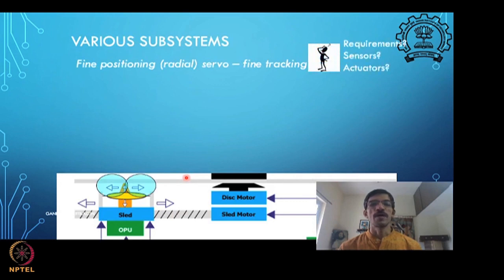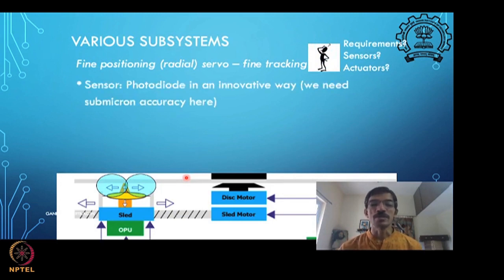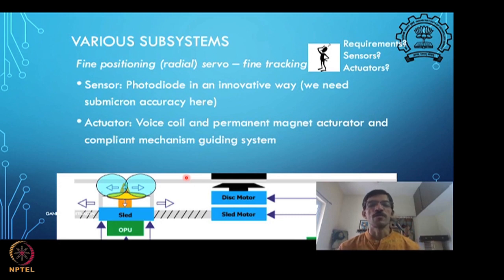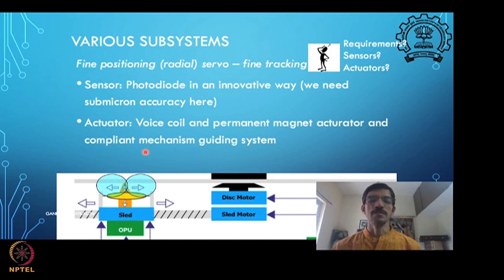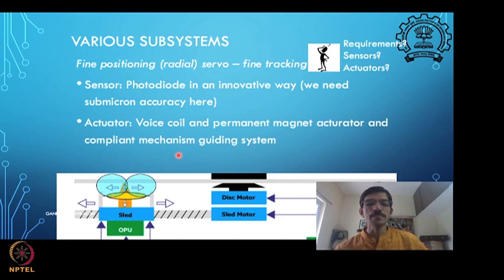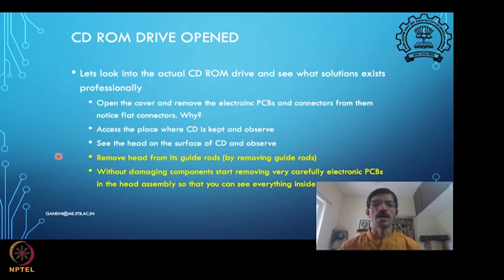Now let's think about fine tracking: what are the requirements, what sensors and actuators are needed? The sensor used here is some kind of photo detector, and the actuator is a small voice coil actuator. We need to think about how to create a closed-loop system for fine tracking and fine focusing — what sensors and actuators will be needed for that.